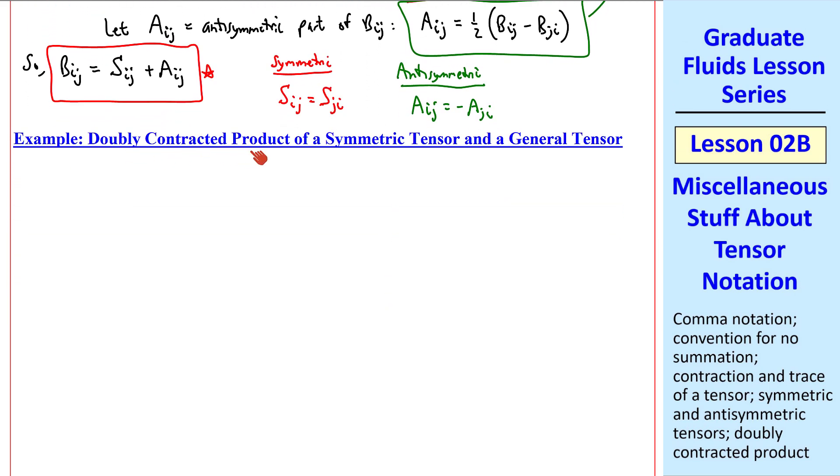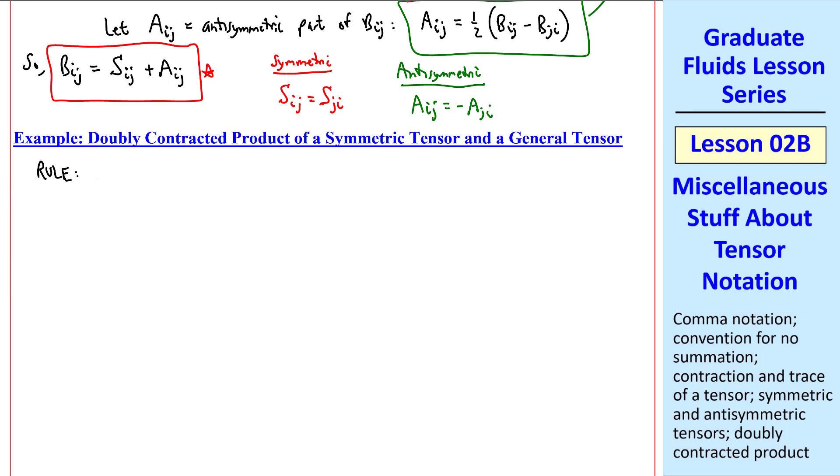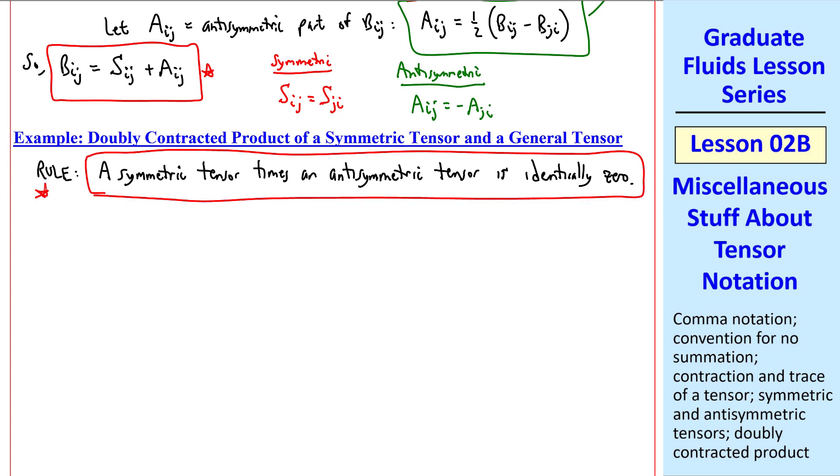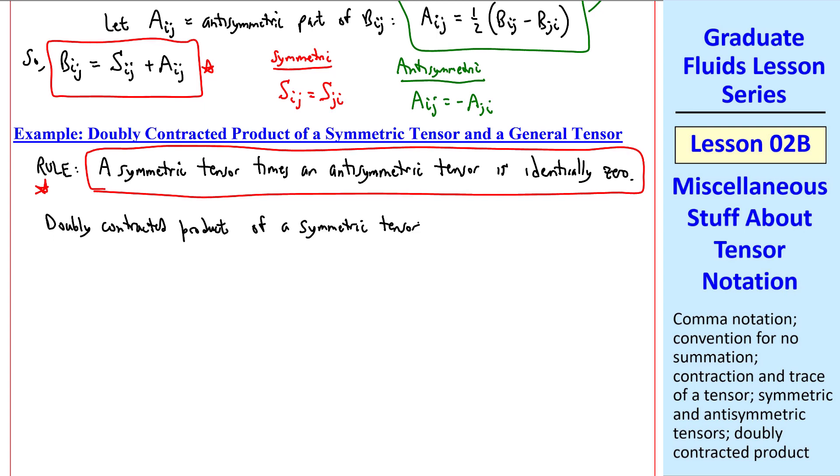This property of splitting the second-order tensor into symmetric and antisymmetric parts is useful, for example, with something called the doubly contracted product of a symmetric tensor and a general tensor. First, I'll state a rule, namely a symmetric tensor times an antisymmetric tensor is identically zero. You can prove this to yourself by doing some examples.